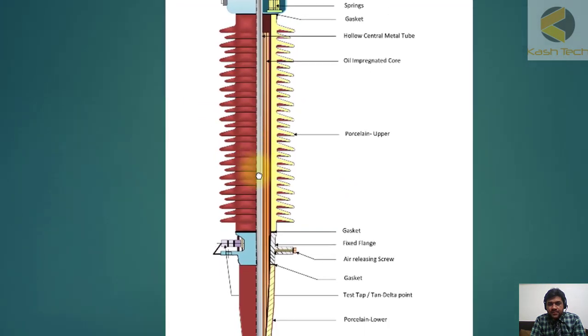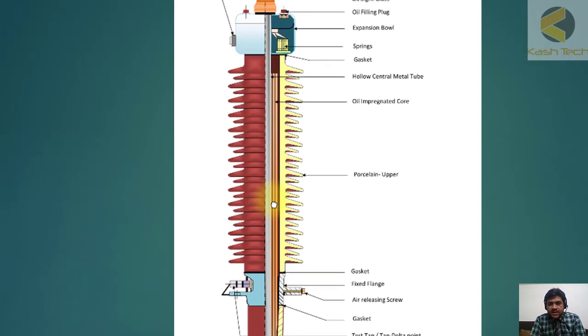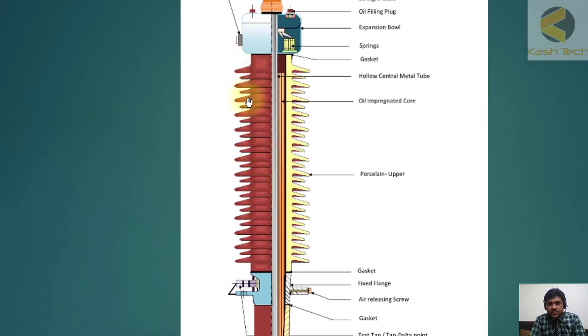Another thing you might have noticed - the bushing is not straight, it is in this zigzag format: up down, up down, up down. What is the purpose of this? If you take the straight line, the distance is less, but if you follow this path as per this bushing, the distance is much more. This method is used to increase the creepage distance.